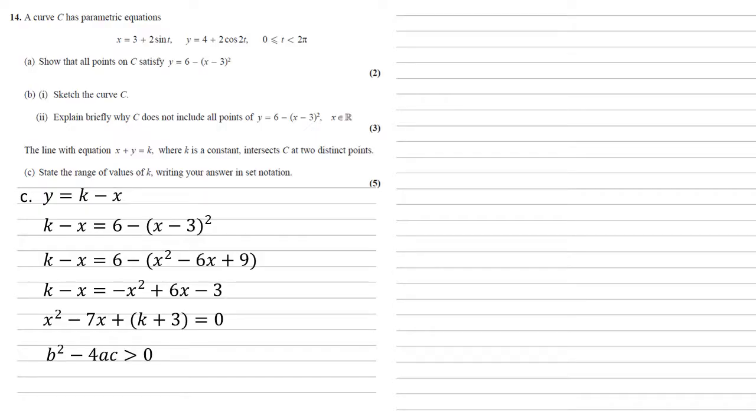So we've got b is equal to negative 7. We've got a equal to 1 and c equal to k plus 3. So putting those in gives us this equation here. Simplifying gives us 49 minus 4k minus 12 is larger than zero. Rearranging this gives us 4k is less than 37, hence k must be smaller than 37 over 4. So we've got our upper bound.